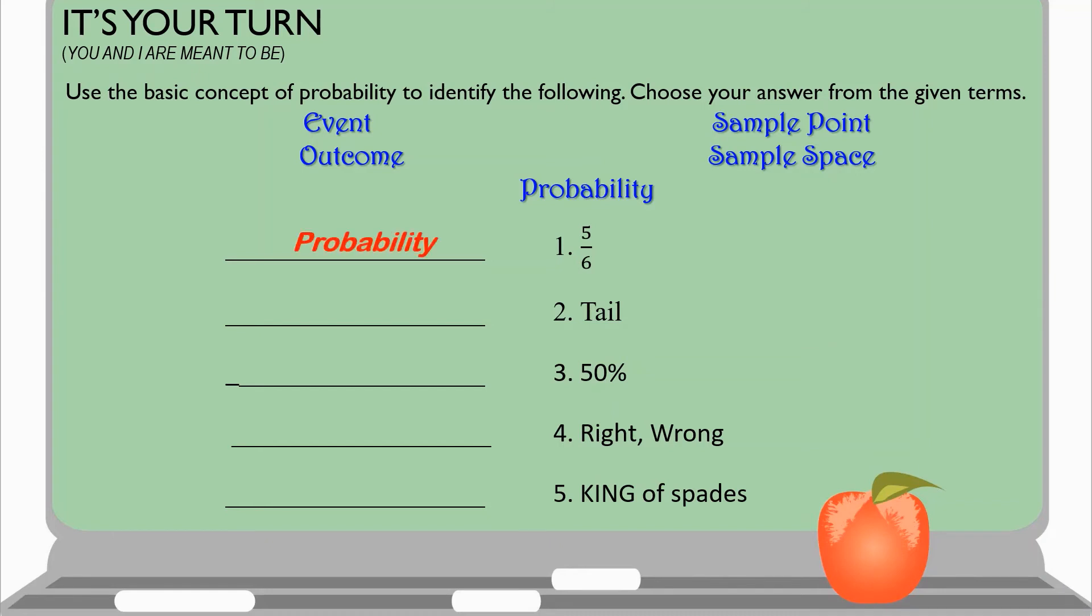Now, let's check your answer. For number 1, we have 5 over 6. So, it is called probability. Why? Since it talks about fraction. For number 2, we have the tail. The answer is sample point. Since you choose one between the two. Next, we have number 3, 50%. We have the probability. Why? Because it talks about percent.